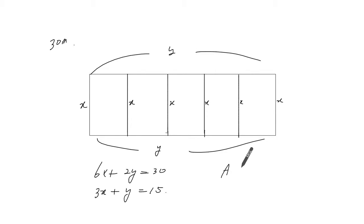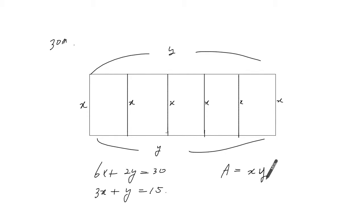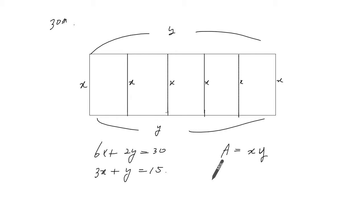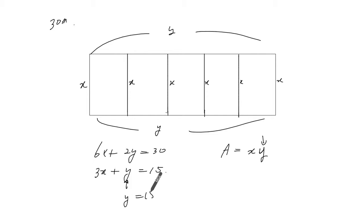We want to maximize the area, which can be expressed as X times Y, so XY. We want to be able to visualize this as a parabola. Now if you replace this Y here with this Y — which is 15 minus 3X — so you replace that right in there.